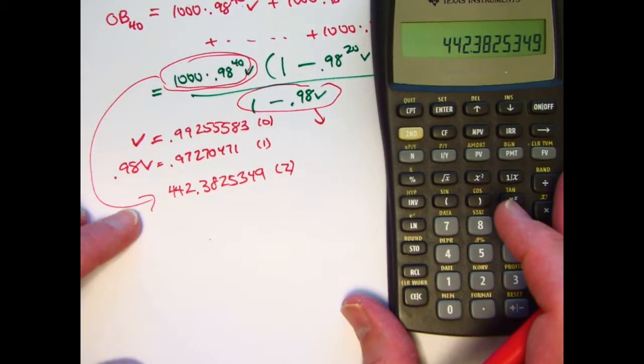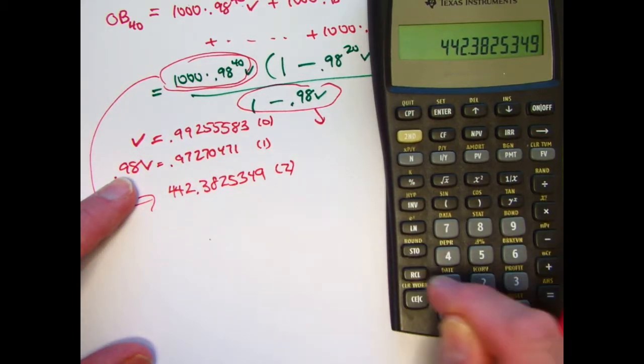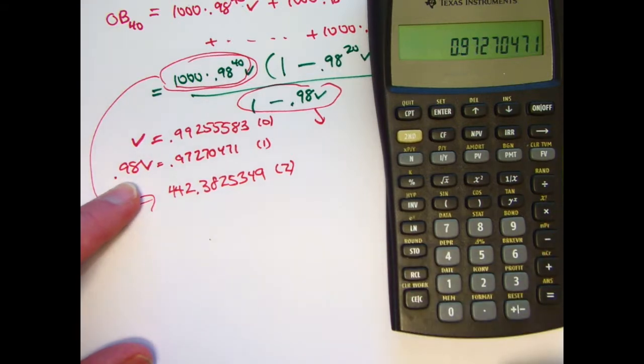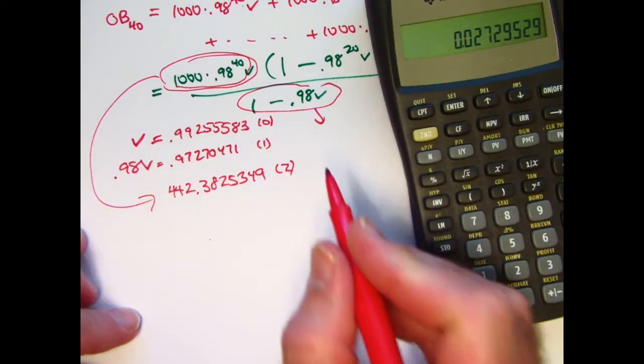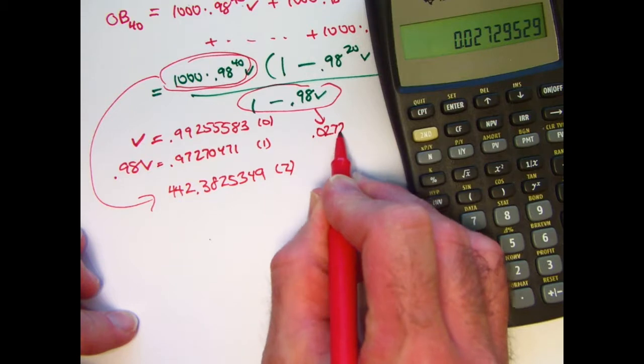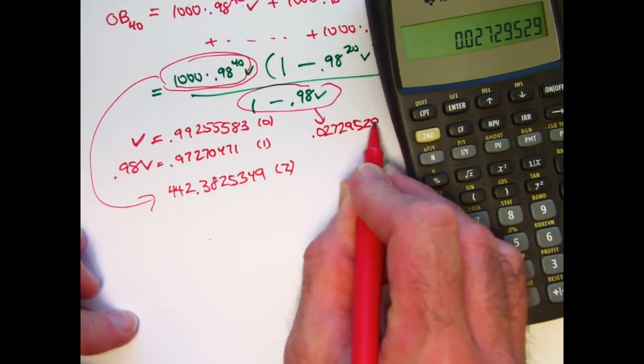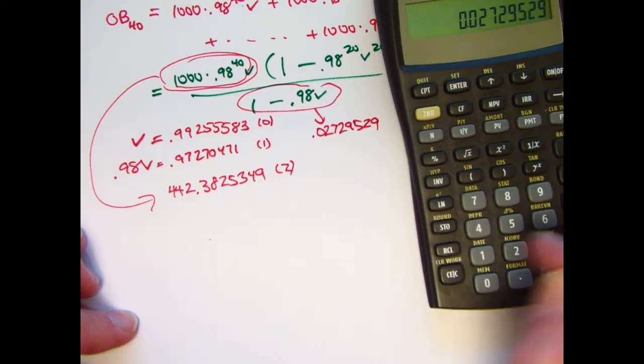0.98V is in register 1. Recall 1. Subtract that from 1. Let's store that in register 3. I'll write it down as well: 0.02729529. Store that in register 3.